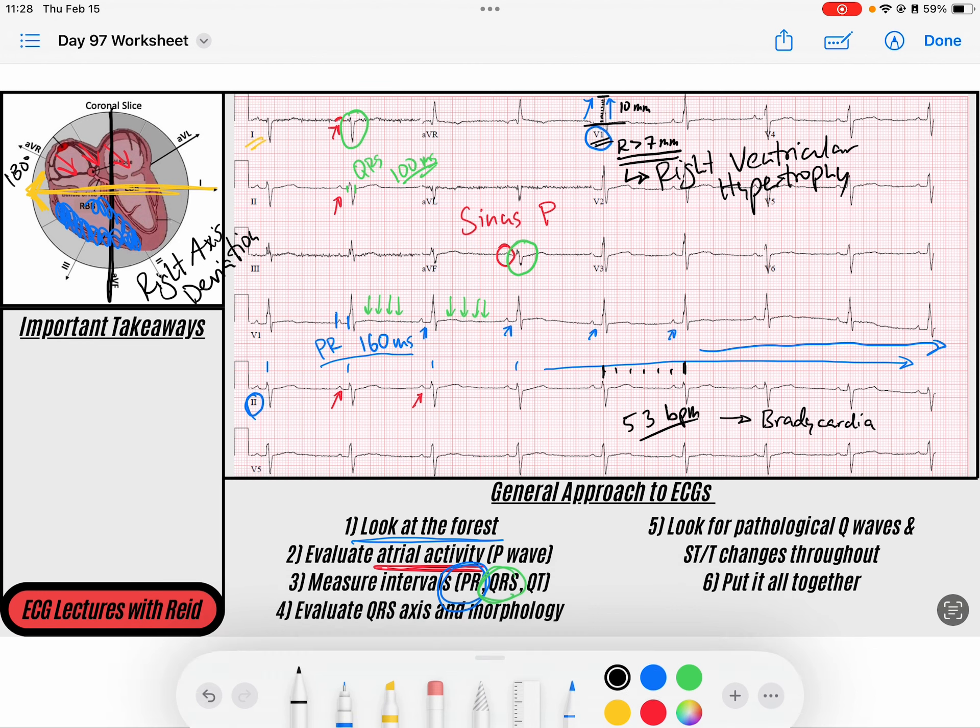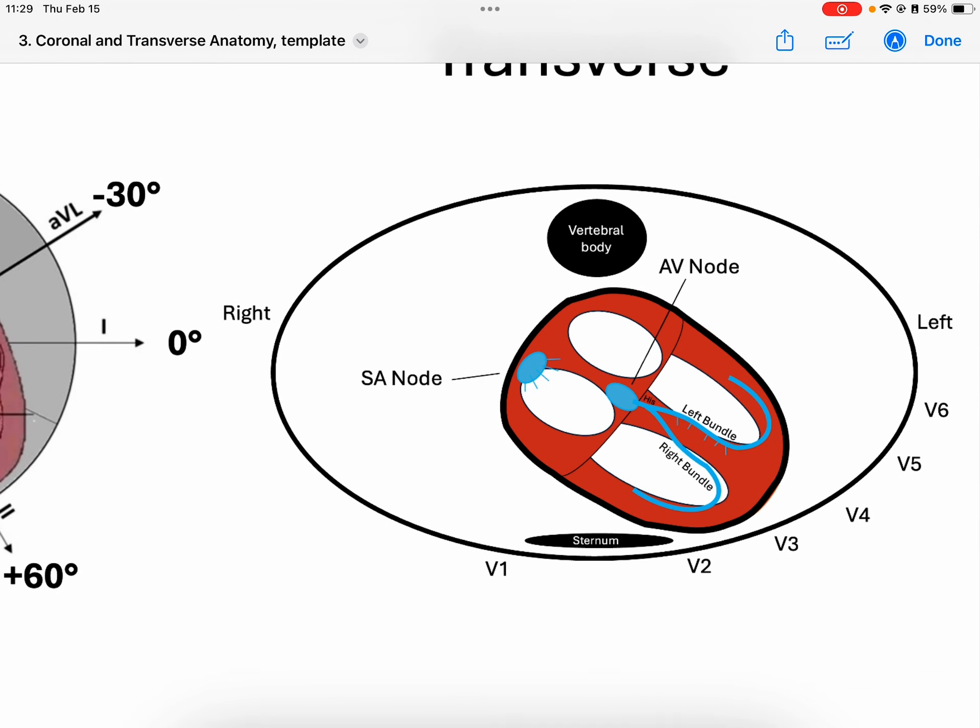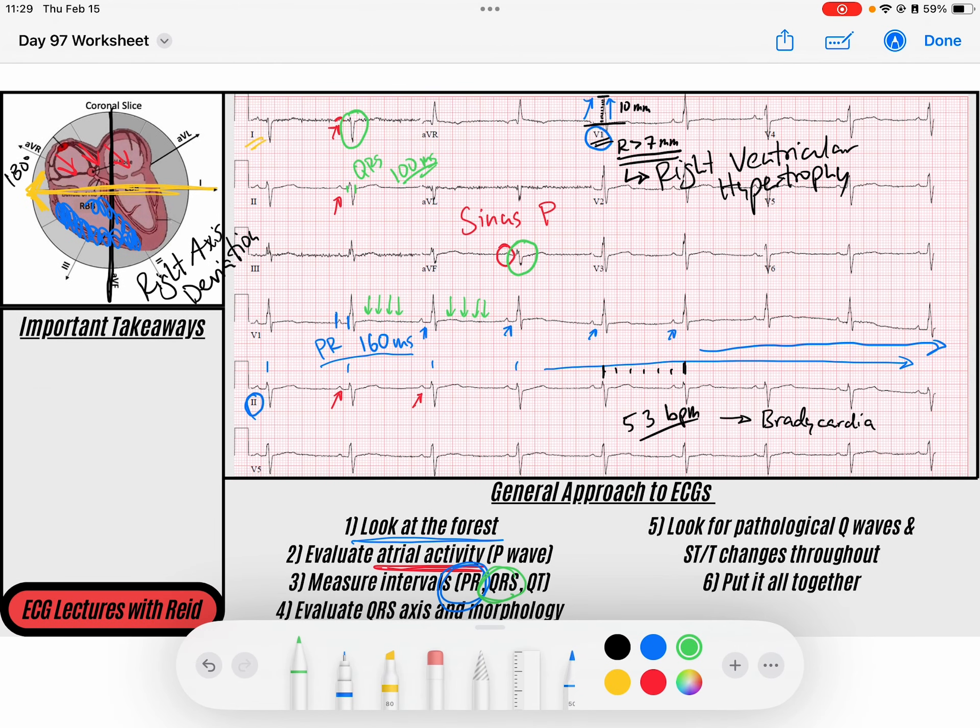And that makes sense. If we look at our transverse diagram of our precordial leads, you can see that my right ventricle, which is all this muscle right here, depolarization towards that muscle is mainly captured by this V1 lead and a little bit by V2, but more so V1. And so that's where we can measure if my right ventricle is hypertrophied. That explains our right axis deviation.